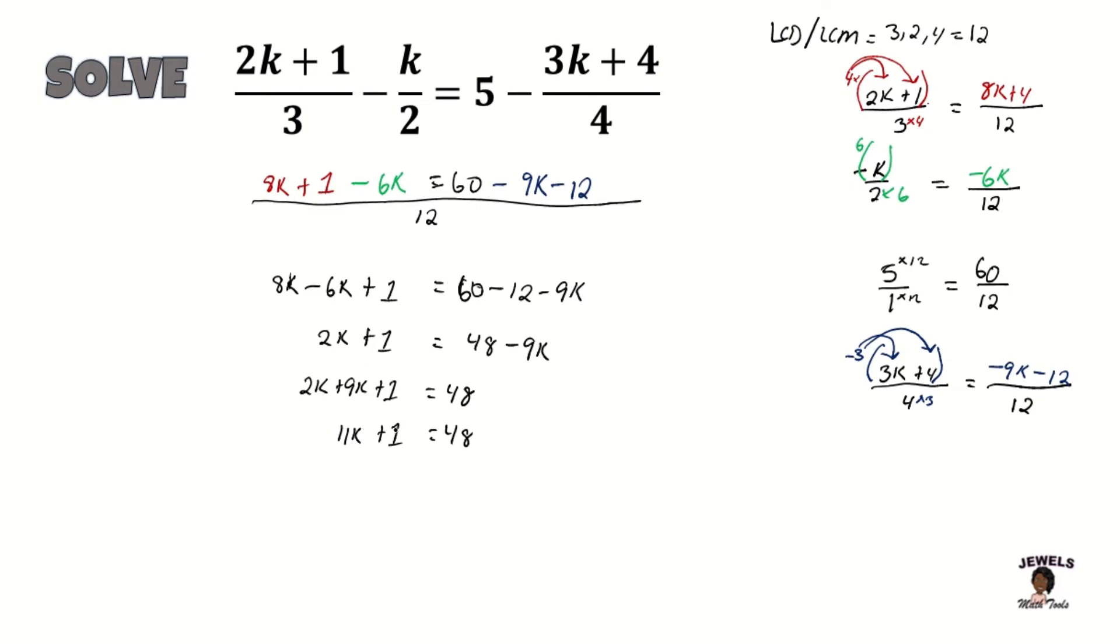So I have my 2K plus 9K would equal to 11K plus 4 equals 48. And now I'm going to collect my constants. And since my 4 is being added, that means on the right-hand side I will subtract that 4 and put back my 11K, so 48 minus 4.